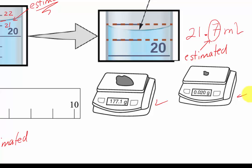So what you have to do is just write down the number that is on the displays. So we have 177.1, and over here we have 0.020.